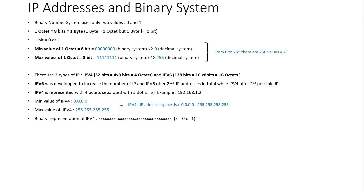While with IPv4, we can have up to 2 to the power of 32 possible IPs. IPv4 is represented with 4 octets separated with a dot. Here we have an example of IPv4: 192.168.1.2. The minimum value of an IPv4 is all octets set to 0, that means 0 four times. And the maximum value for an IPv4 is 255 four times. And the binary representation of an IPv4 is a group of 8 digits repeated 4 times, with x equal to 0 or 1.